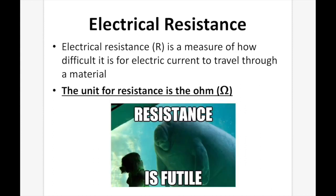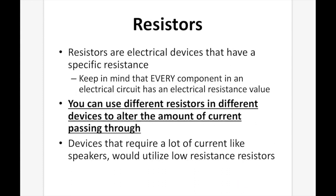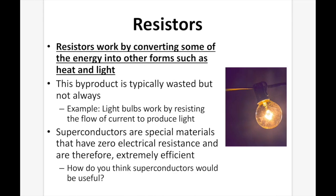Electrical resistance, or R, is a measure of how difficult it is for electric current to travel through a material. The unit for electrical resistance is the ohm. Some materials do not allow electrical currents through easily and therefore have a high resistance — insulators such as plastic and rubber have a high resistance. Other materials have a low resistance and allow electrical current to pass through easily; metals are good conductors. Resistors are electrical devices that have a specific resistance, and every component in an electric circuit has a resistance value. You can use different resistors to alter the amount of current that passes through — devices that require a lot of current, like speakers, would utilize low resistance resistors. Resistors work by converting some energy into other forms such as heat and light.